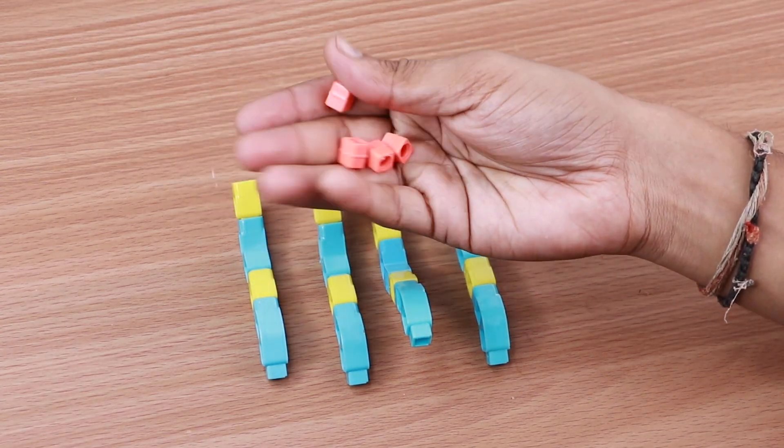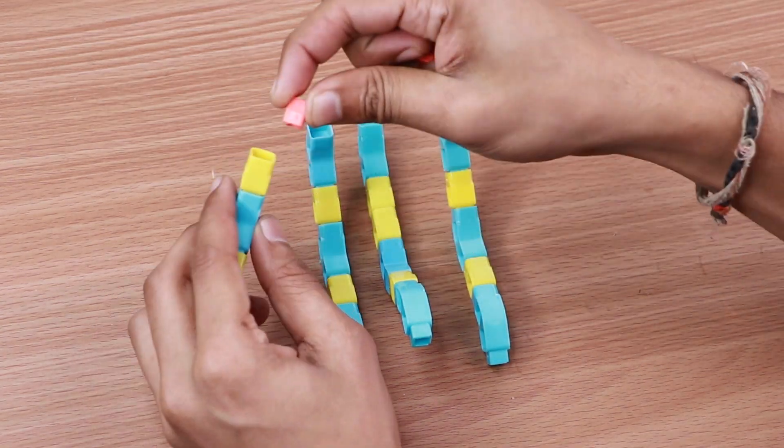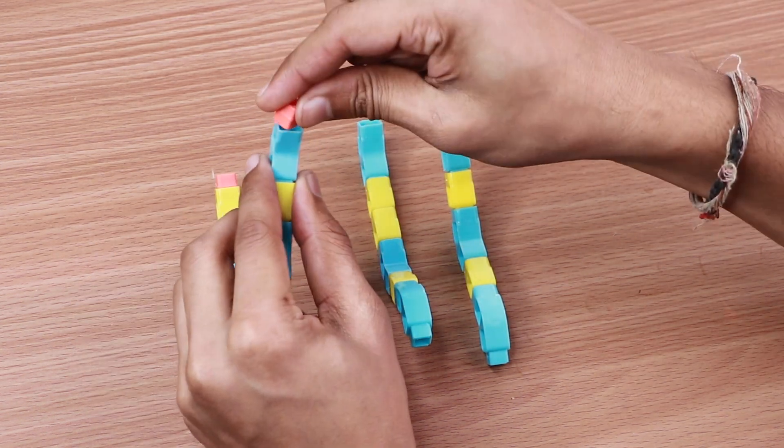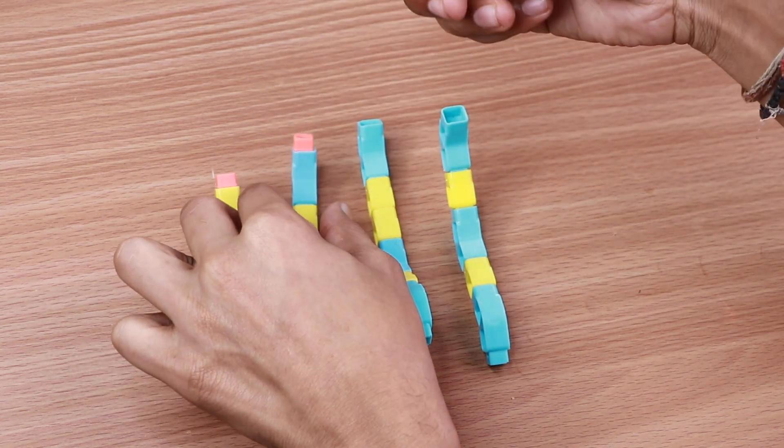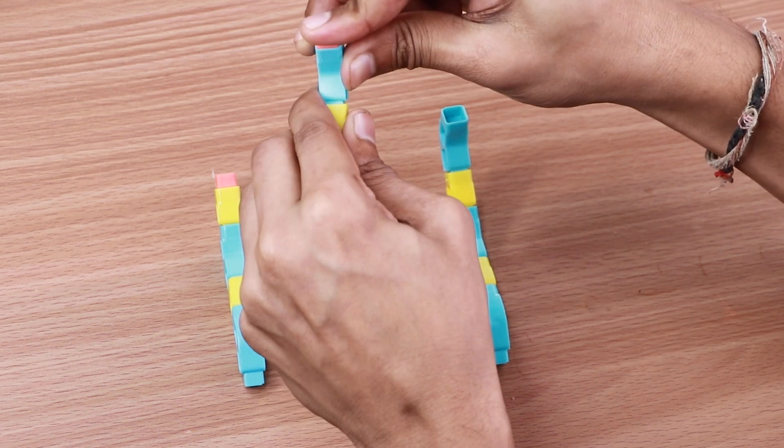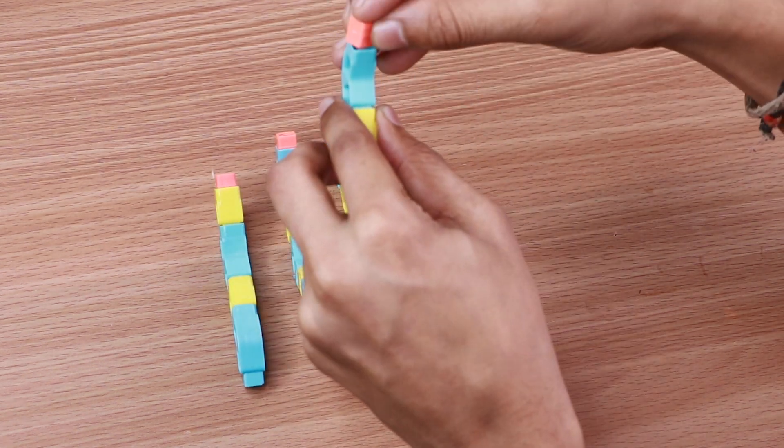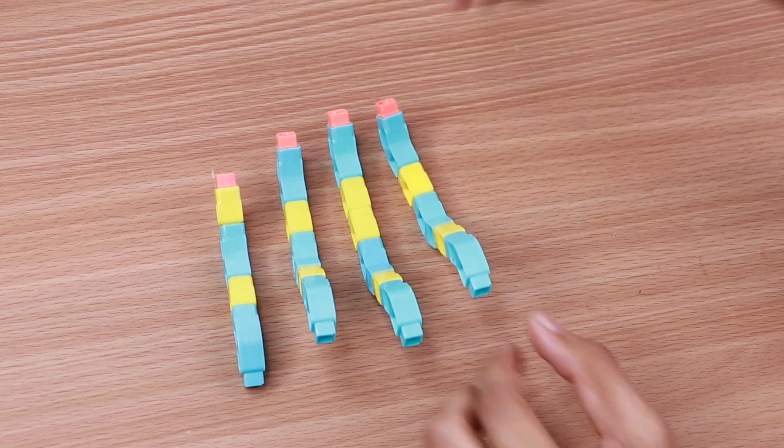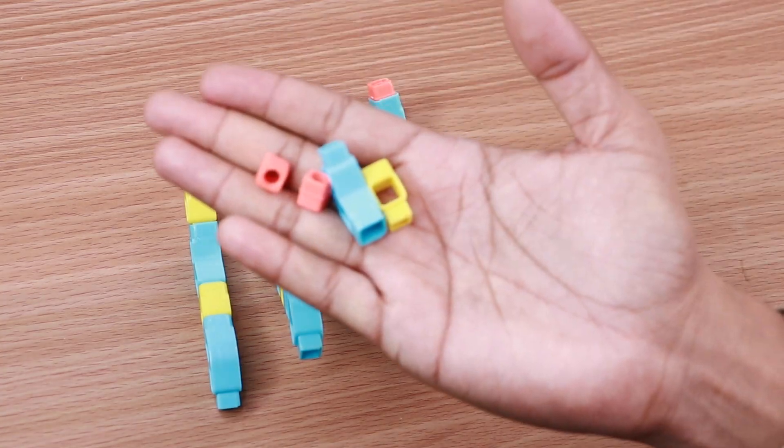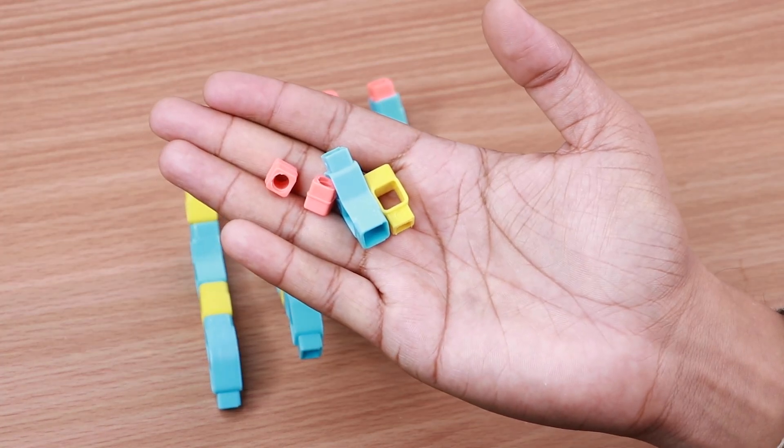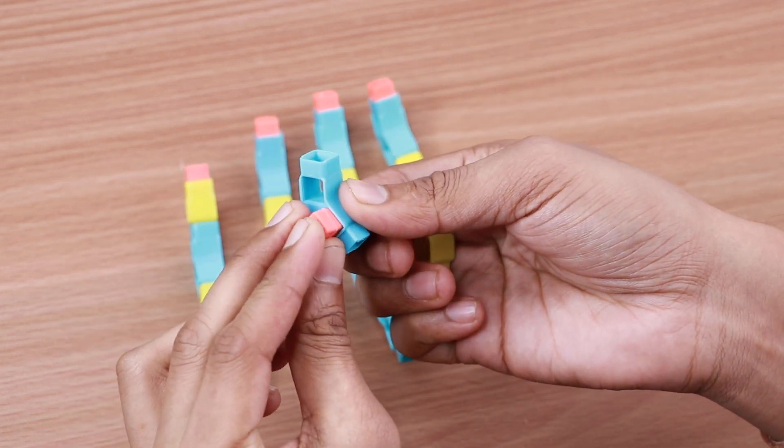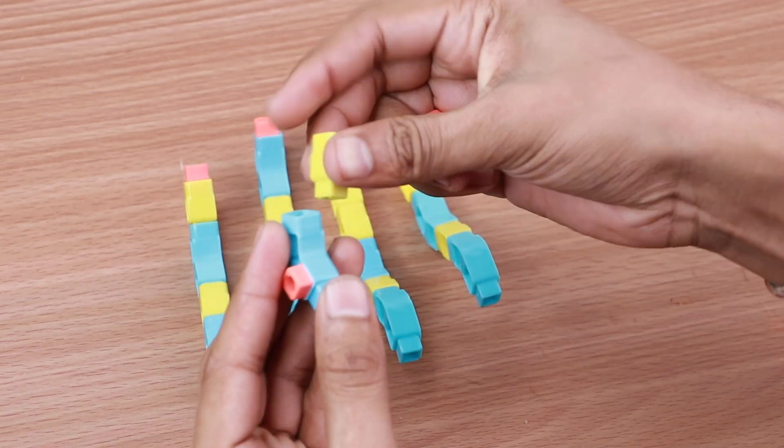Next, take 4 MM couplers. Attach them to the end of the fingers as shown. Take 2 MM couplers, 1 2-hole elbow and 1 1-hole elbow and join them. This will be our hand model's thumb.